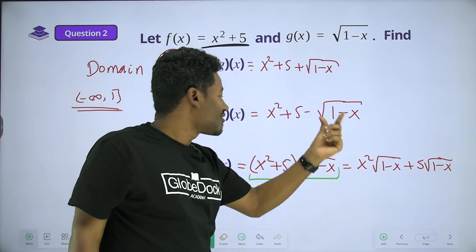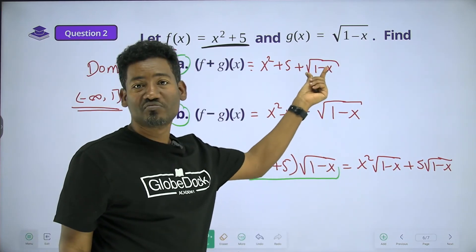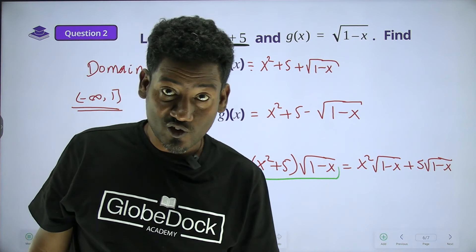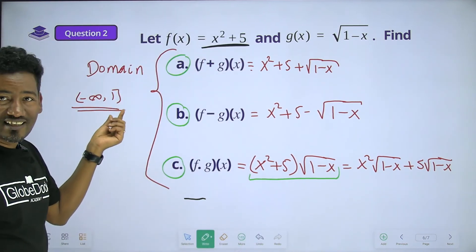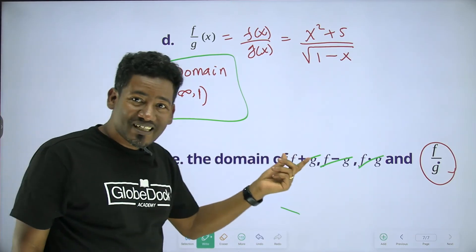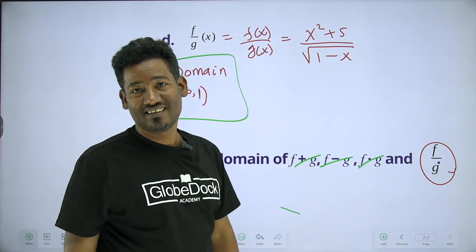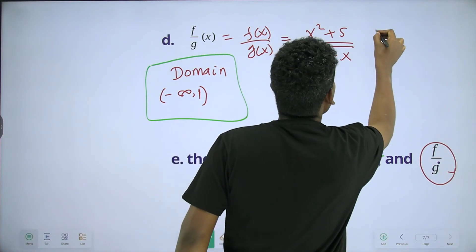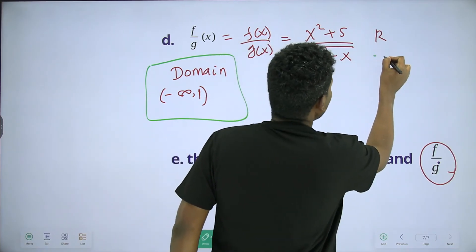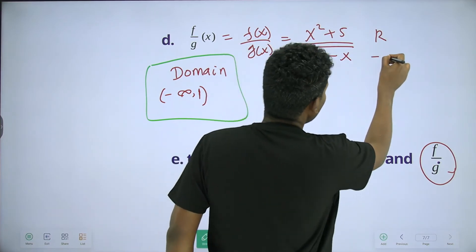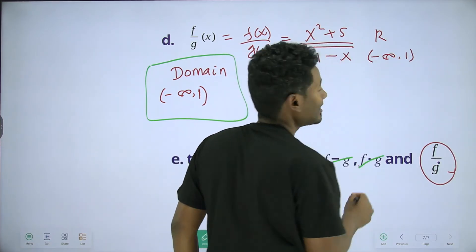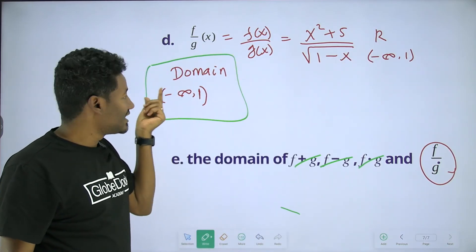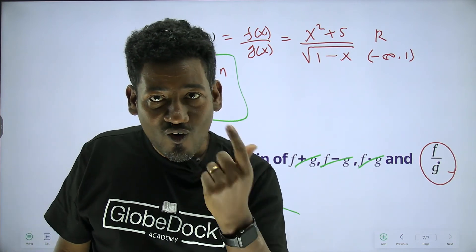Since the denominator is square root of 1 minus x, we need 1 minus x to be strictly greater than zero — not just greater than or equal to zero — because the denominator cannot equal zero. This means x must be strictly less than 1. So the domain of f over g is the open interval negative infinity to 1, not including 1.